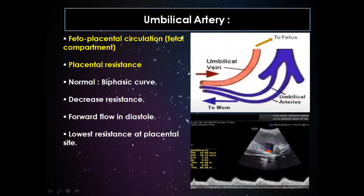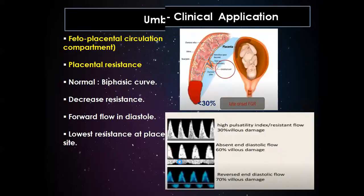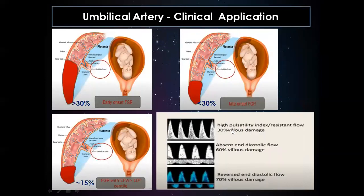The umbilical artery represents the fetal part of the placenta and placental resistance. Normally it has a biphasic flow with decreased resistance and forward flow in diastole. The umbilical artery will only change if there is at least 30% damage to the tertiary villi. With 30% damage there is a high-resistant flow pattern; with 60% villus loss there will be absent end-diastolic flow; and the flow reverses with further loss.